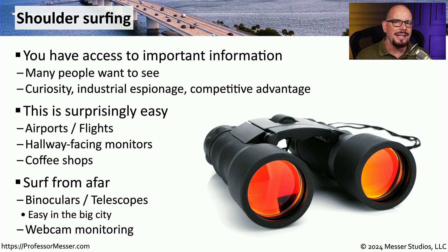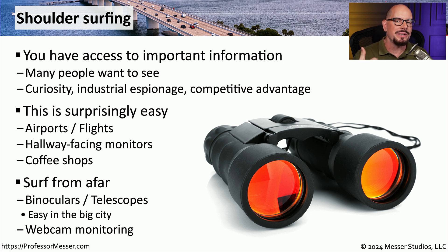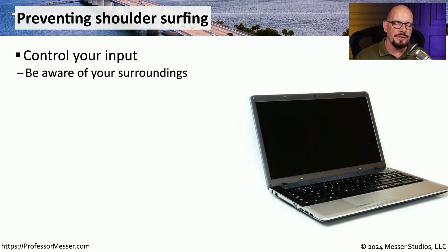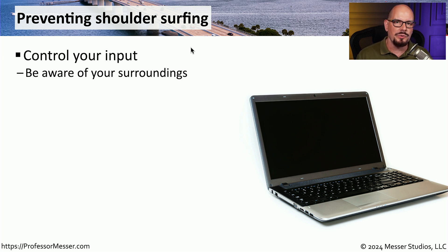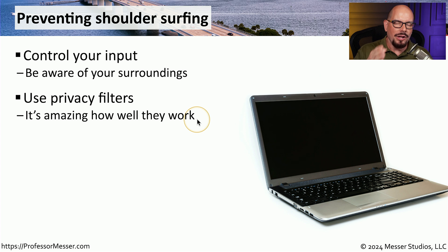One of the more advanced versions of shoulder surfing involves attackers putting malware on your computer to enable your camera and see exactly what you're doing. We can use a number of techniques to prevent shoulder surfing. One is to be aware of where you are — if you're in a coffee shop, maybe your back should be towards a wall. In a public area, it might not be the best time to scroll through payroll or social security numbers. You can also get privacy filters for your LCD screen that only display information if you are sitting directly in front of the device.